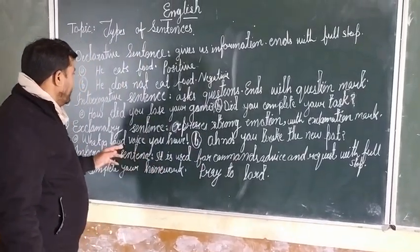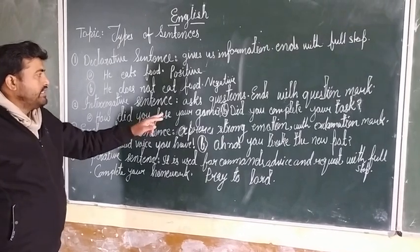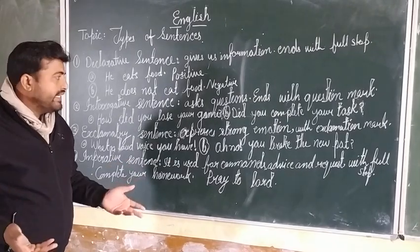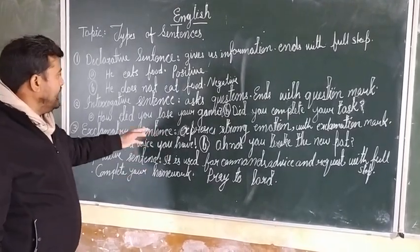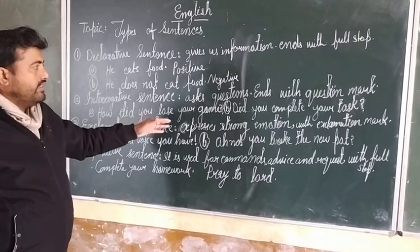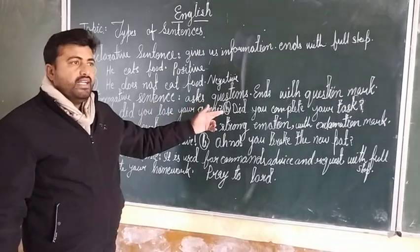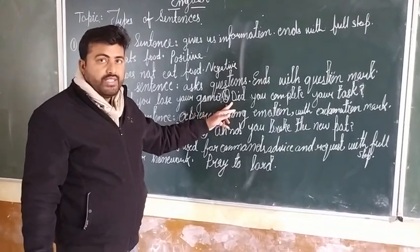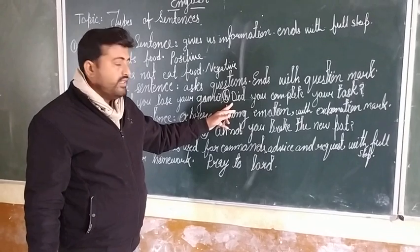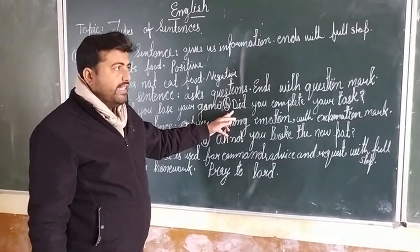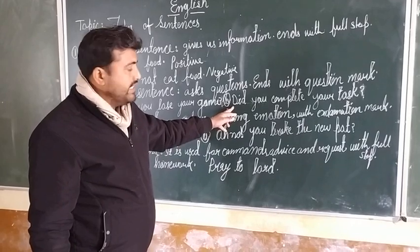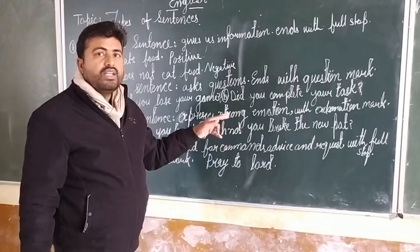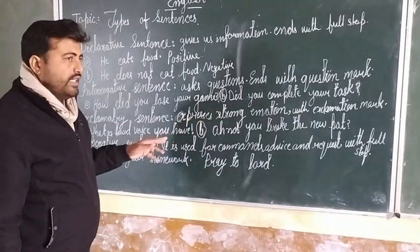Let's see some examples. 'How did you lose your game?' — with a question mark. If you want to make yes/no answer questions, you are not using WH question words; you are only using your helping verb. For example: 'Did you complete your task?' — yes, like that you can make it.